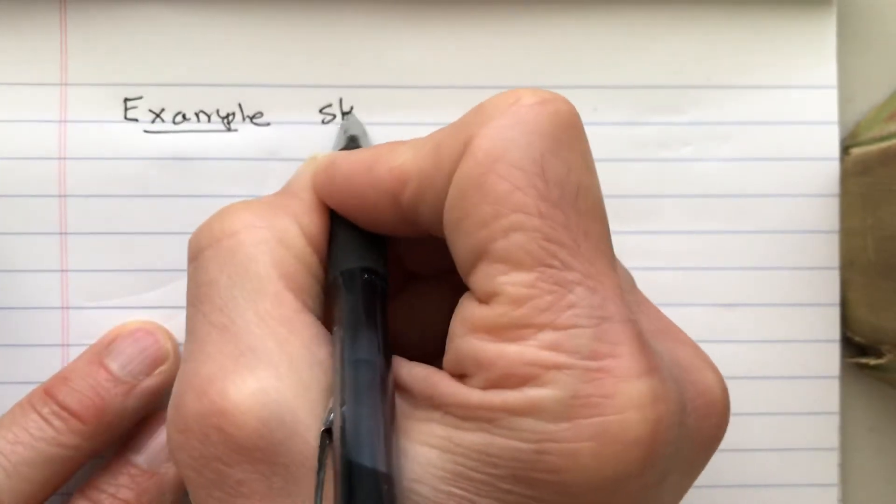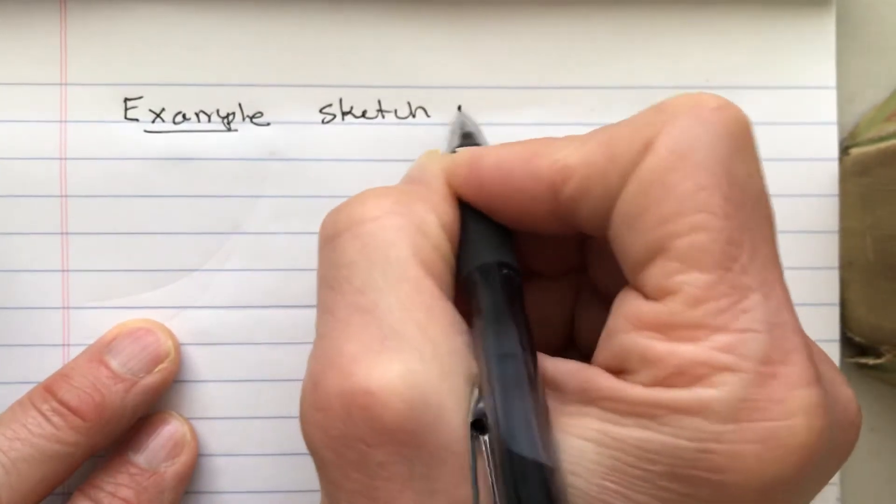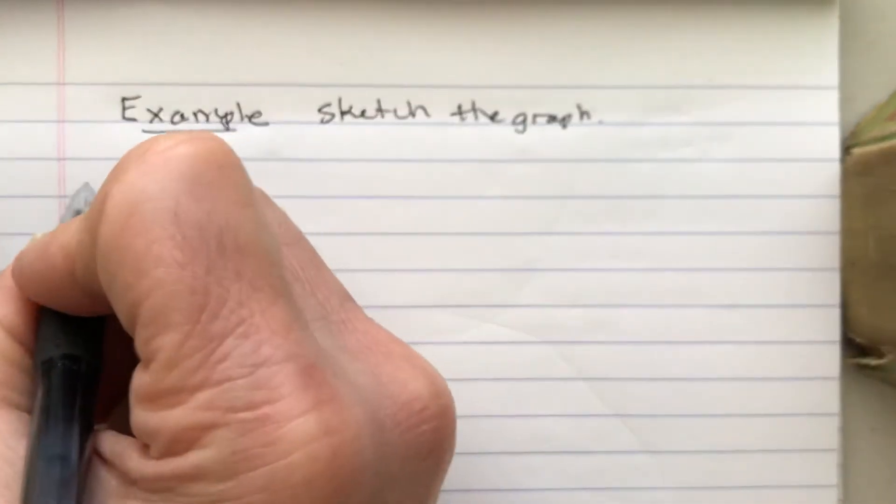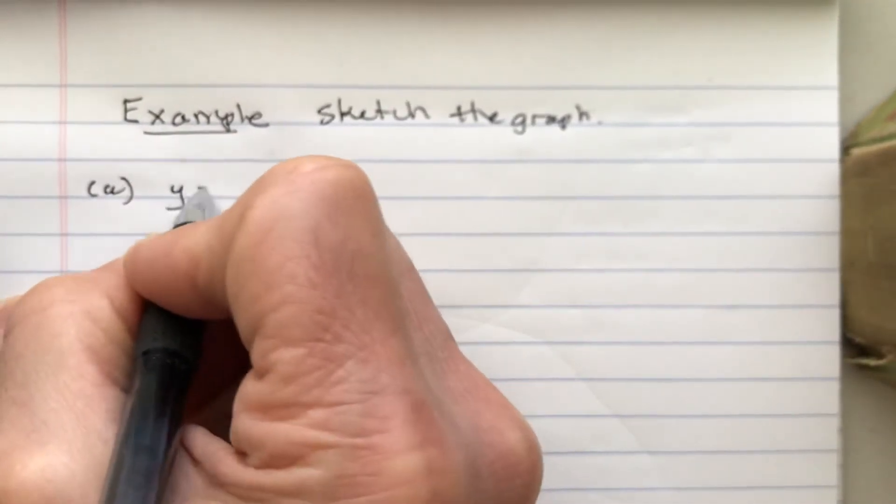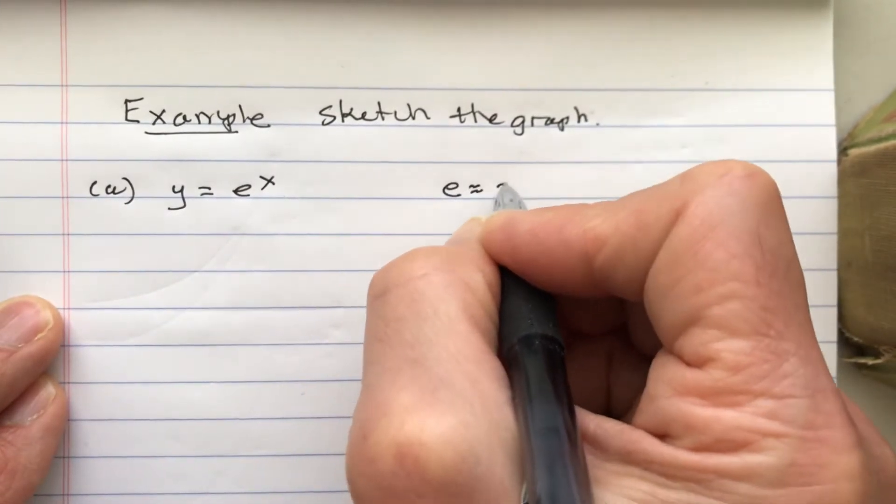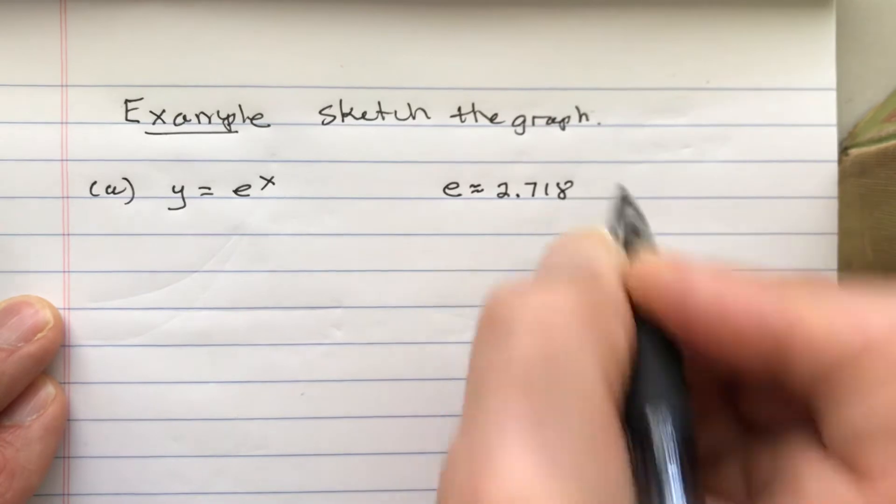Let's sketch the graph of these exponential functions. This time I'm not using base 2, I'm doing e, which is around 2.718.